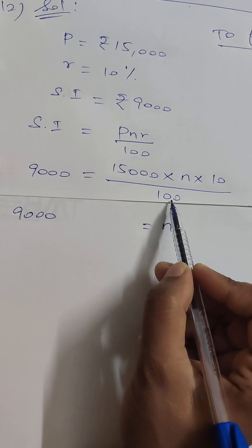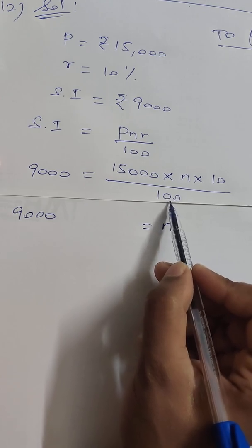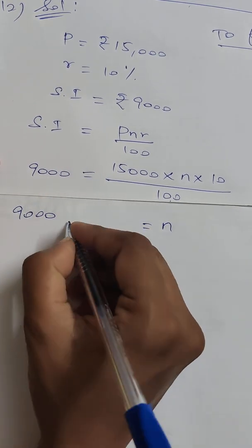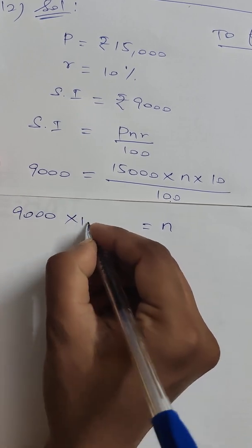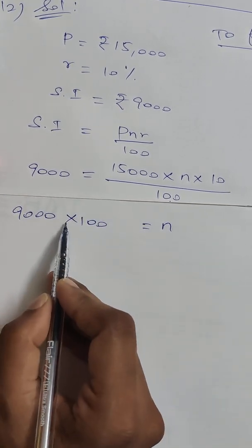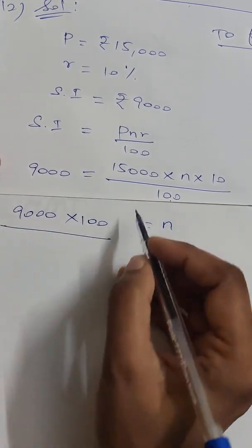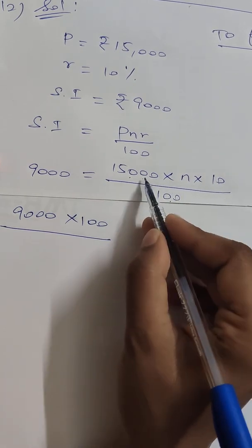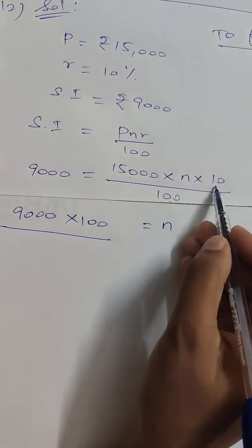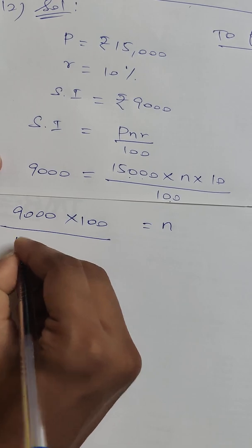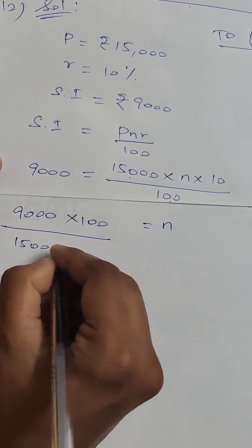100 is in the denominator. If we move it to the other side, it goes to the numerator. So the numerator is SI into 100, and the denominator is P into R — that is 15,000 into 10.